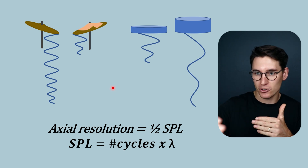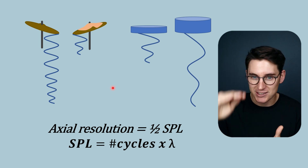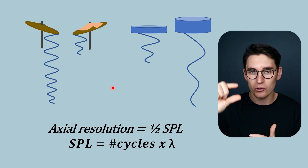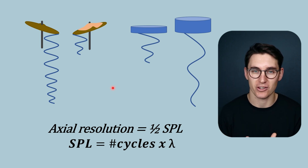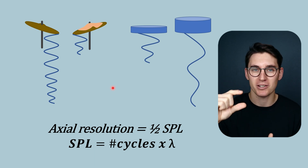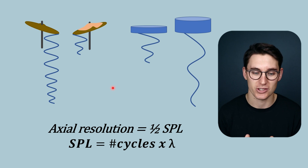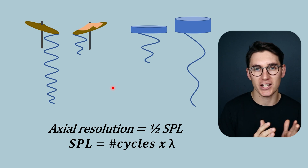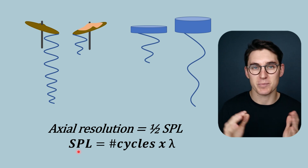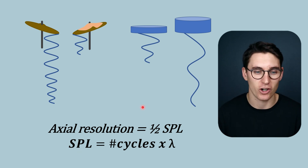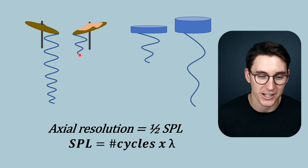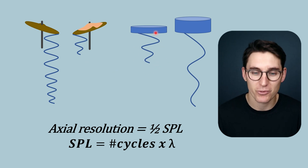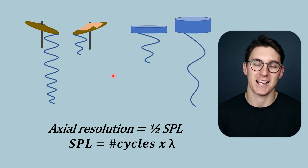Importantly, axial resolution does not change as we go deeper into our ultrasound image — it remains the same regardless of depth. We don't lose frequency as the ultrasound pulse travels through tissues; we lose intensity, but the spatial pulse length doesn't change as it heads into tissue. The only thing that changes our axial resolution is our spatial pulse length, which is related to the quality factor of our beam, the amount of dampening, the number of cycles in the pulse, and the wavelength — or equivalently, the frequency — of our ultrasound beam. Higher frequency means better axial resolution.